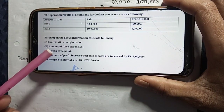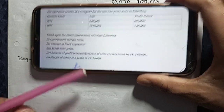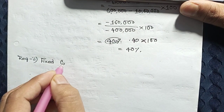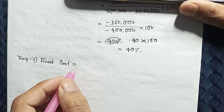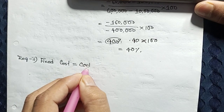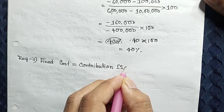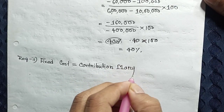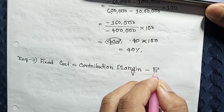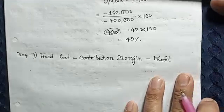Requirement 2 is the Amount of Fixed Expense. Fixed cost — F-I-X-E-D, C-O-S-T — Fixed Cost. The formula for Fixed Cost is: Contribution Margin minus Profit. So Fixed Cost = Contribution Margin − Profit.